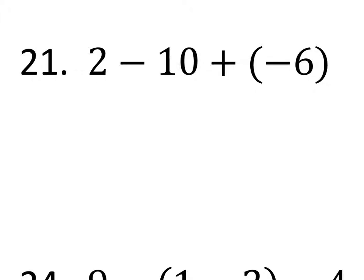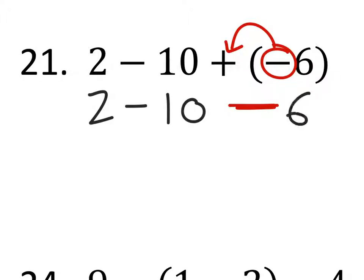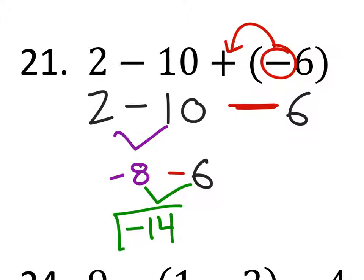All right, so problem 21. We haven't looked at it like this yet because we got plus the negative right there. So the negative tells us that we're going to do the opposite of plus, which makes that a minus right there. So rewriting this problem: 2 minus 10 minus 6. From left to right subtraction, 2 minus 10. If we took away 10 or went 10 to the left, we would land at negative 8. Of course, we still got the minus 6, so if we had negative 8 bucks and then we took away another 6 dollars, we would end up owing 14 dollars.